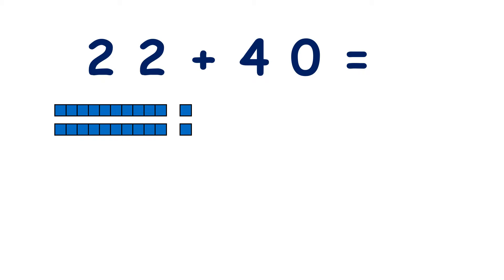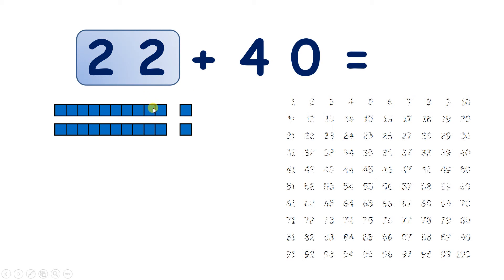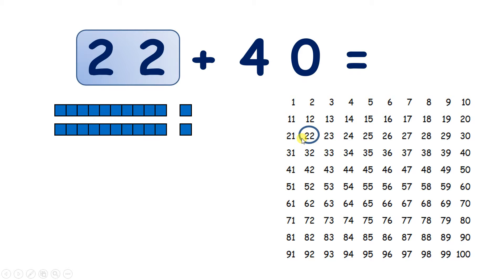Now we have 22 plus 40. So we start on 22, two tens and two units. And we're going to add 40, which is how many tens. If we're adding 40, we need to add four tens.